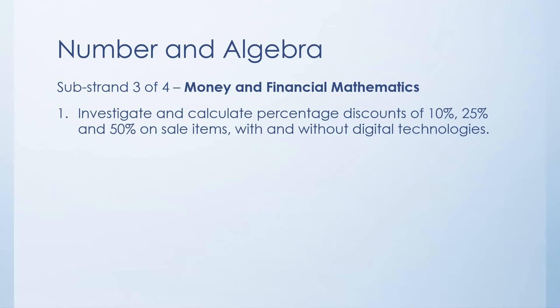The third substrand, money and financial mathematics, it really is just involving discounts. 10%, 25% and 50% discounts. So 10% meaning something gets 10 cents out of every dollar cheaper. 25% means it's a quarter of the price off and 50% of course means half price off. So this needs to be done with and without calculators.